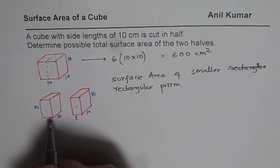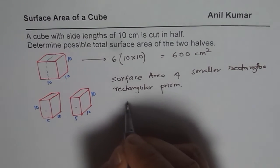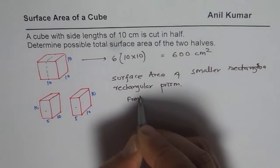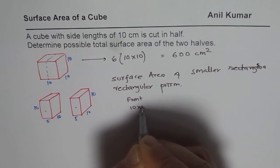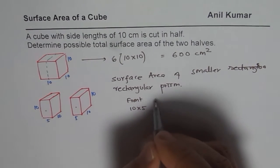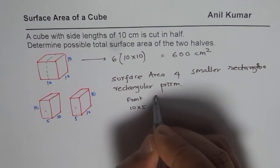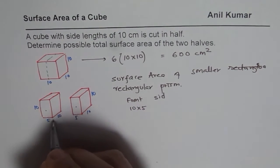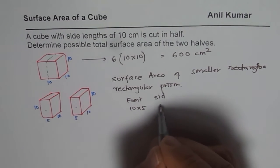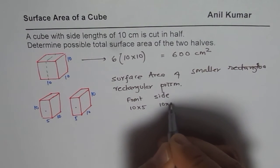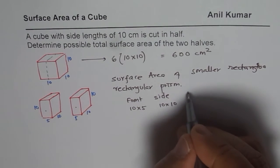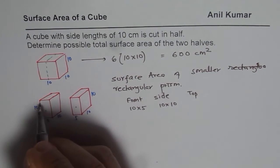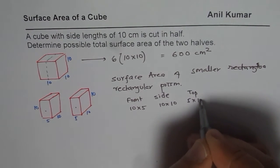So for the smaller rectangular prism, now its front is 10 times 5. So we'll say front is 10 times 5. And the side, or we can say side length is 10 times 10. So side is 10 times 10. And the top and bottom will be 5 times 10. So 5 times 10.